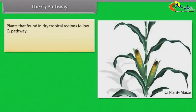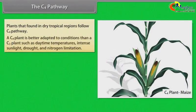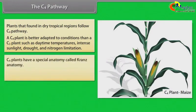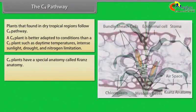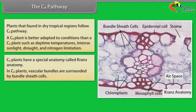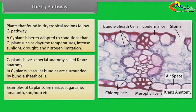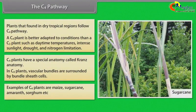The C4 pathway: Plants found in dry tropical regions follow the C4 pathway. A C4 plant is better adapted to conditions than a C3 plant, such as daytime temperatures, intense sunlight, drought, and nitrogen limitation. C4 plants have special anatomy called Kranz anatomy. In C4 plants, vascular bundles are surrounded by bundle sheath cells. Examples of C4 plants are maize, sugarcane, amaranth, sorghum, etc.